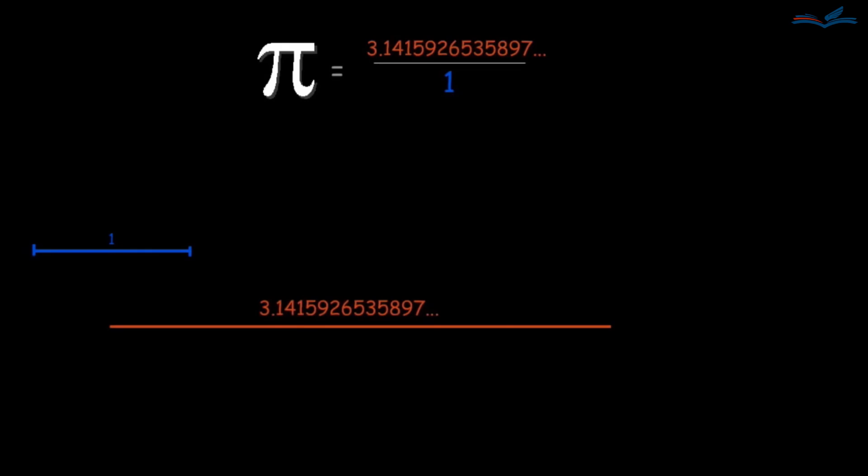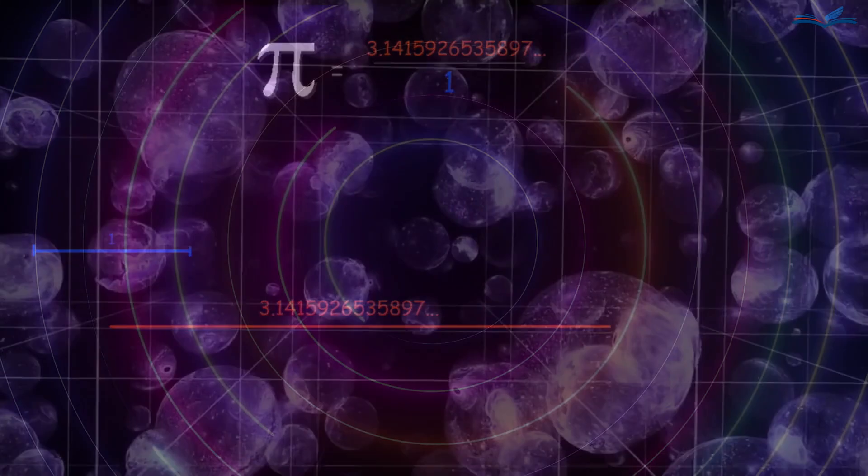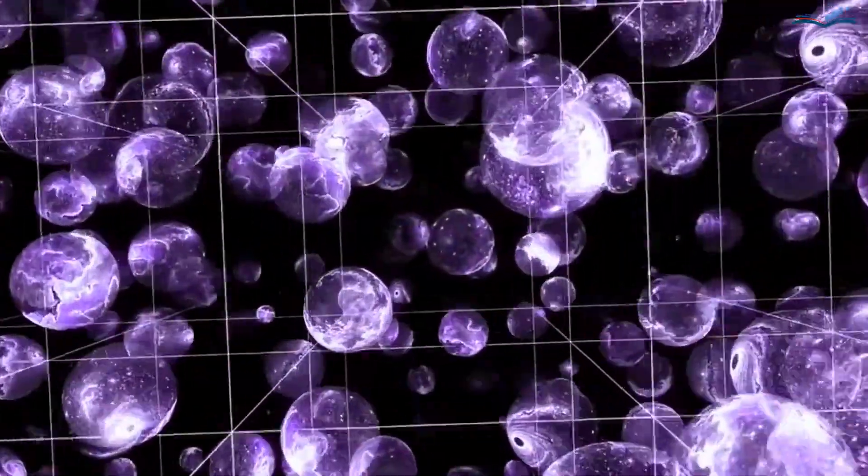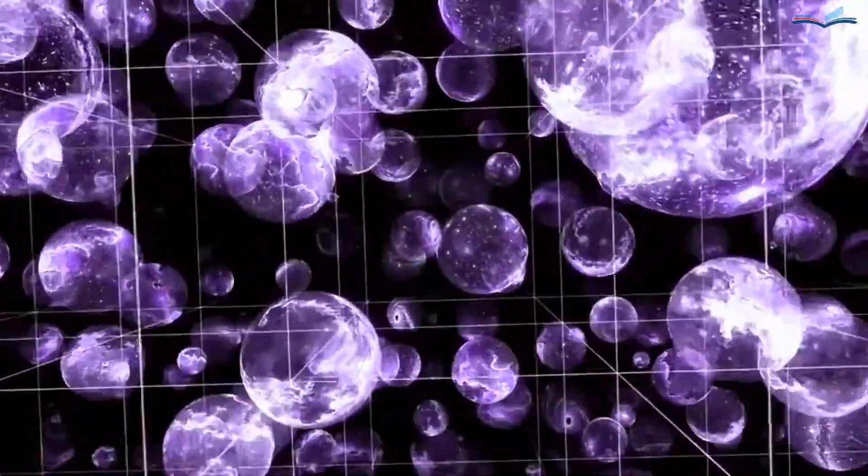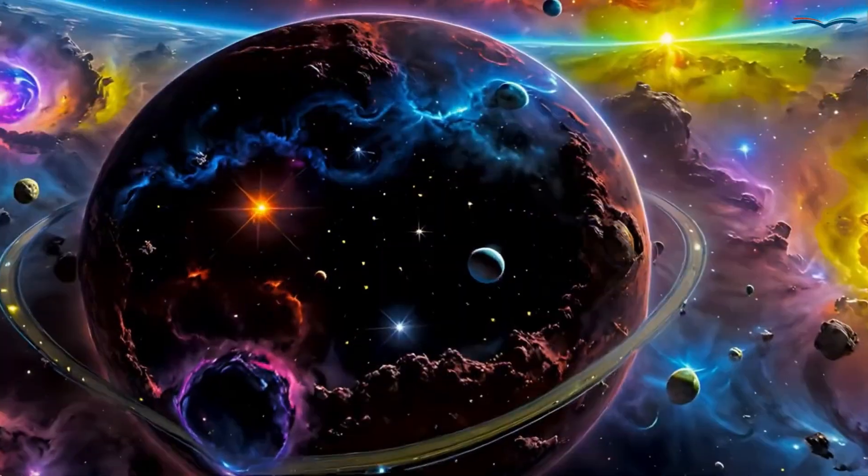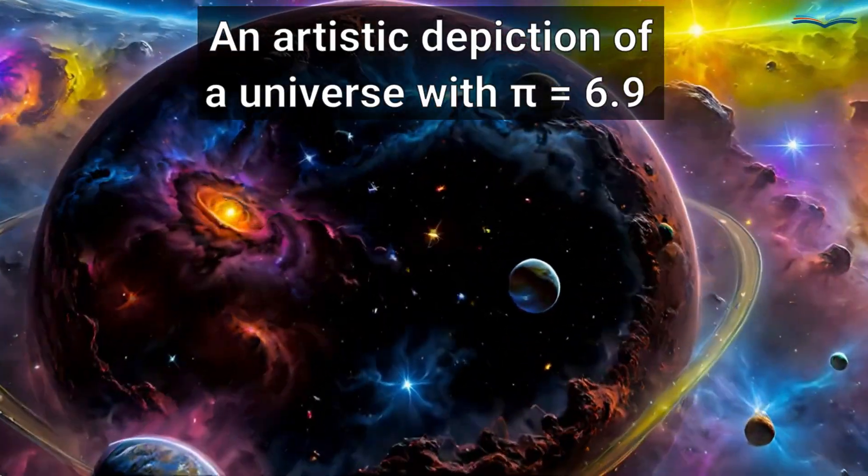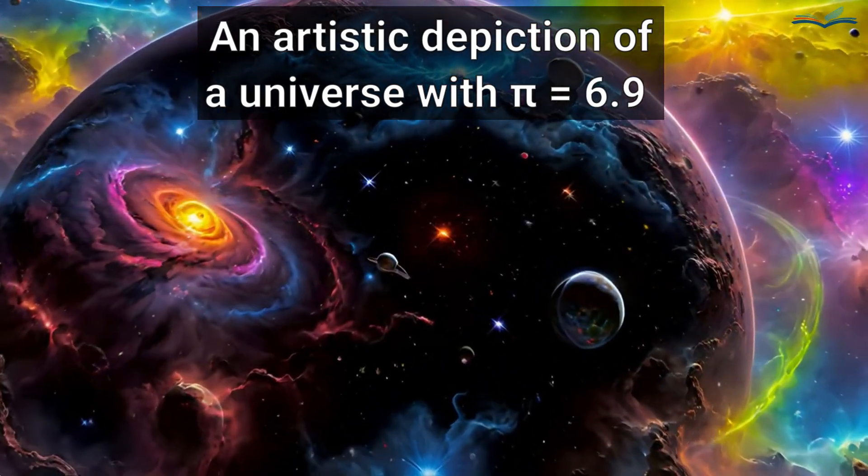Universes where pi has a different value would be vastly different from ours, both mathematically and physically. A change in the value of pi would alter Euclidean geometry, natural laws, planetary orbits, wave behavior, the properties of light, and many other parameters.